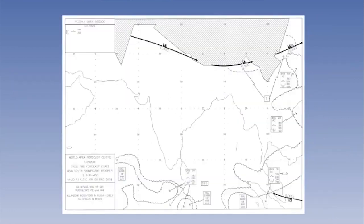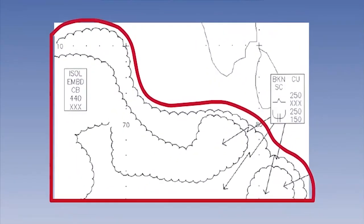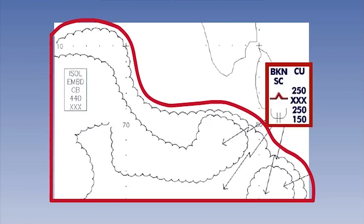In cloud, moderate or severe turbulence is automatically implied on SIG weather charts whenever a CB is forecast. In addition, on the medium-level SIG weather charts, areas of moderate and severe turbulence associated with other types of medium-level cloud are always highlighted by turbulence symbols. These are included within the cloud boxes assigned to every scalloped cloud area.